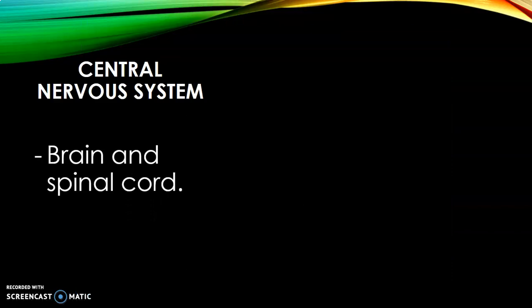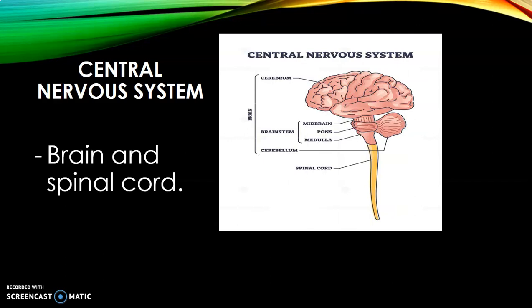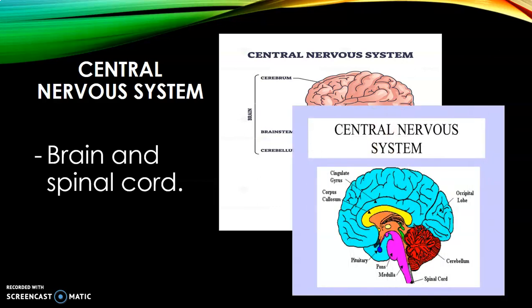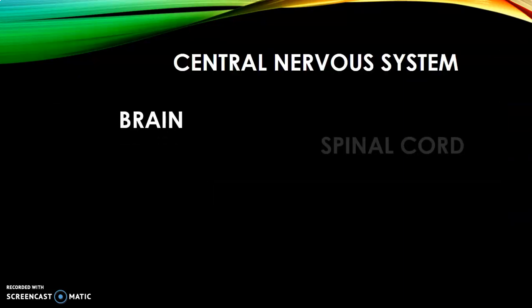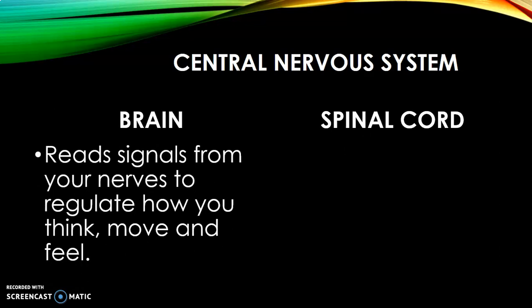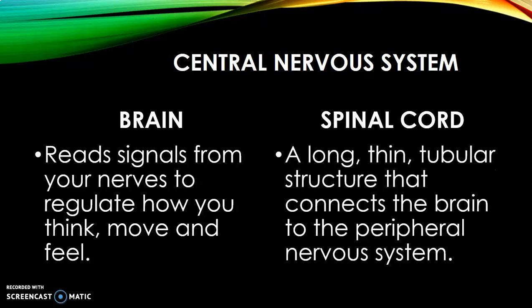The central nervous system comprises your brain and spinal cord. The brain reads signals from your nerves to regulate how you think, move, and feel. The spinal cord is a long, thin tubular structure that connects the brain to the peripheral nervous system. The brain is the command center; information processed there passes into the spinal cord, which connects to the peripheral nervous system. So: sensory neurons receive stimuli, signals go to the spinal cord and brain, then via interneurons to motor neurons to create the response.